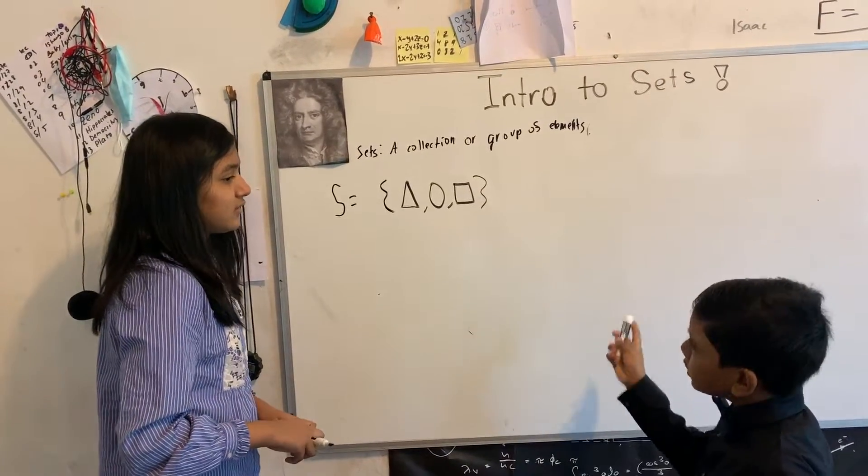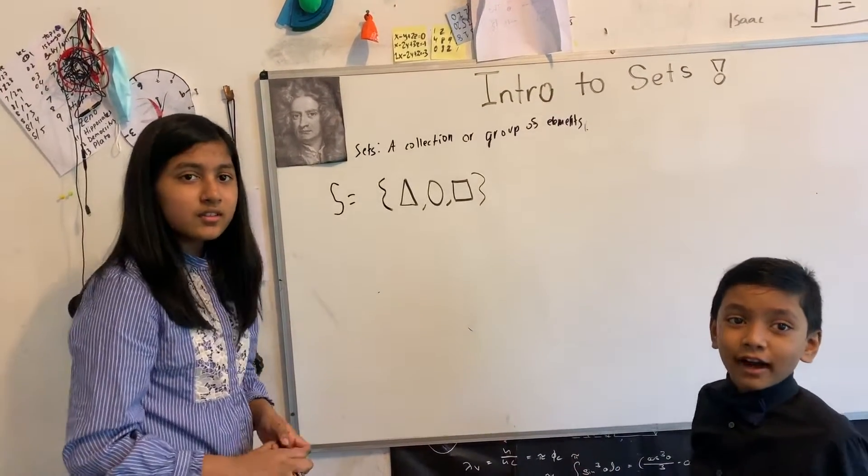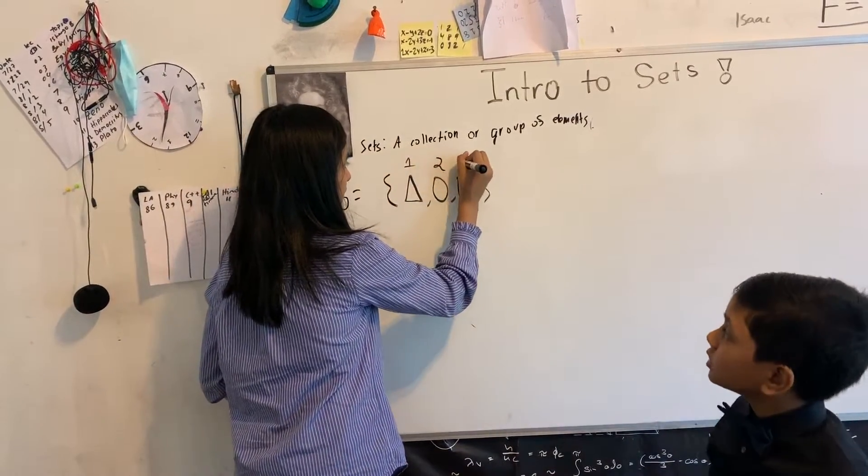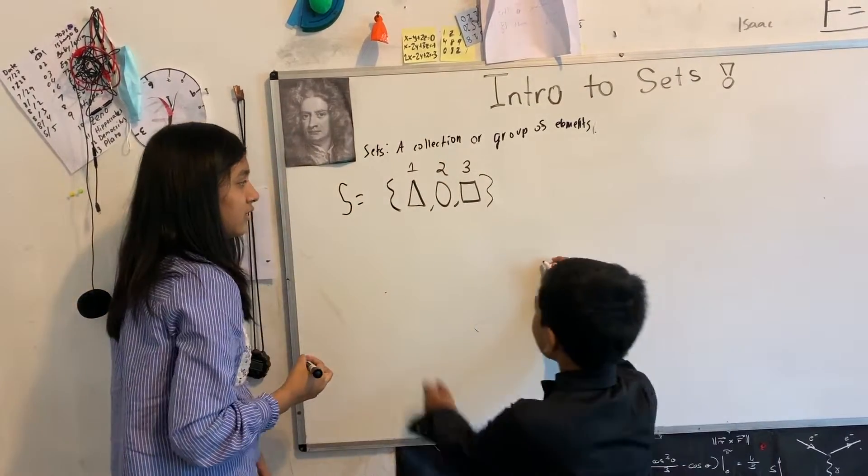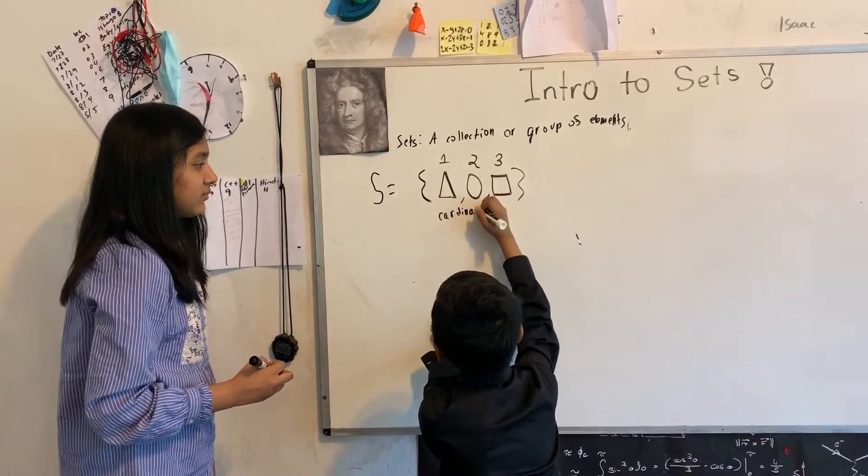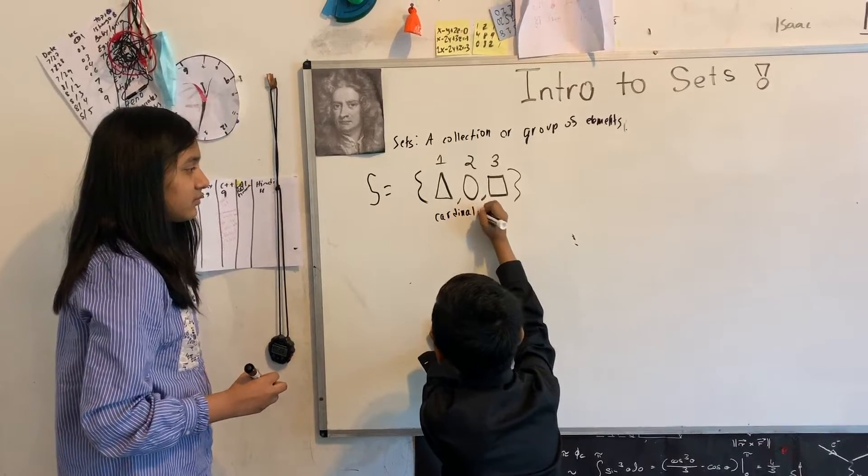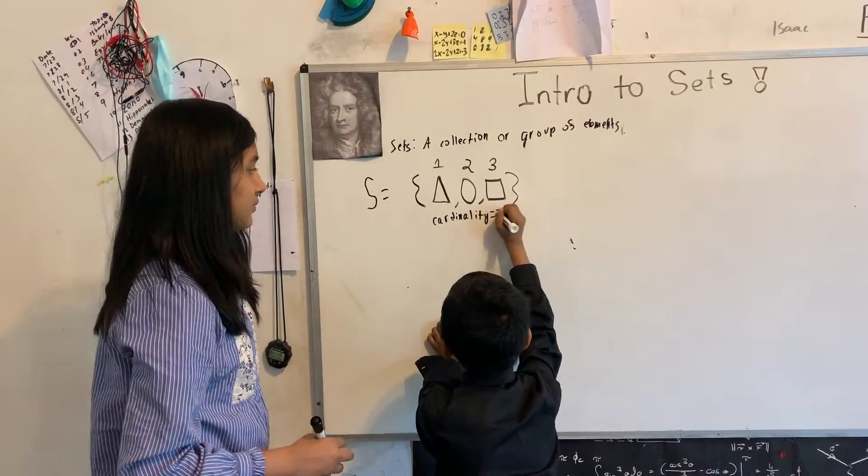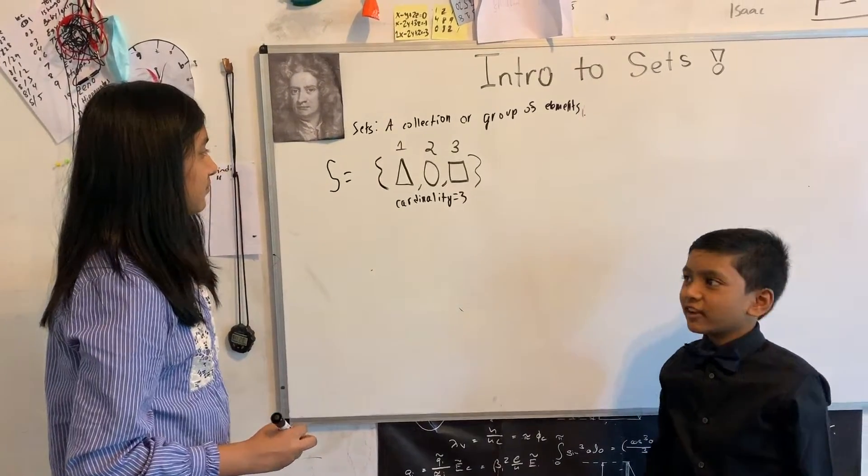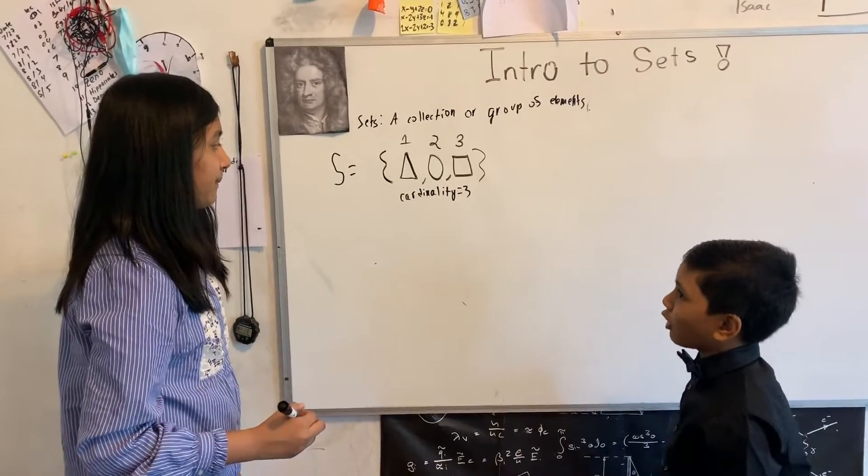One, two, there are three elements. So I think that the cardinality would be three. And cardinality is one of those fancy terms that actually has a simple definition, like parity. Parity sounds really fancy, but it just means if a number is even.